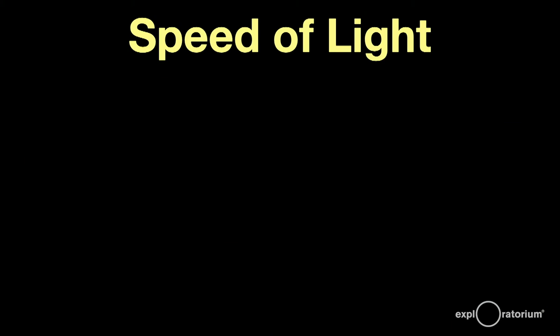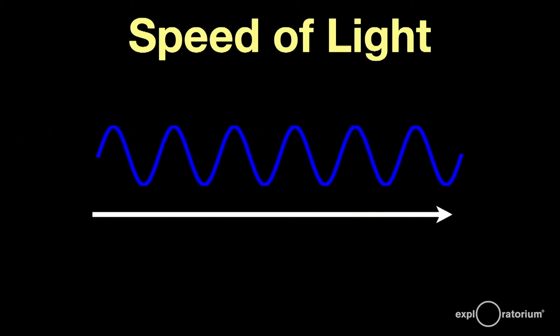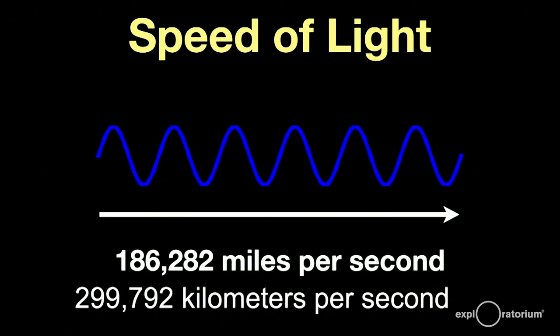Light is an electromagnetic wave, a wave of changing electric and magnetic fields that travels through space at nature's speed limit, 186,282 miles per second, or about 300,000 kilometers per second. Nothing in nature moves faster.